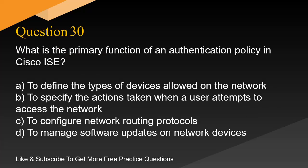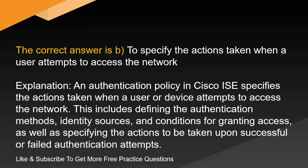Question 30. What is the primary function of an authentication policy in Cisco ISE? A. To define the types of devices allowed on the network. B. To specify the actions taken when a user attempts to access the network. C. To configure network routing protocols. D. To manage software updates on network devices. The correct answer is B. To specify the actions taken when a user attempts to access the network.